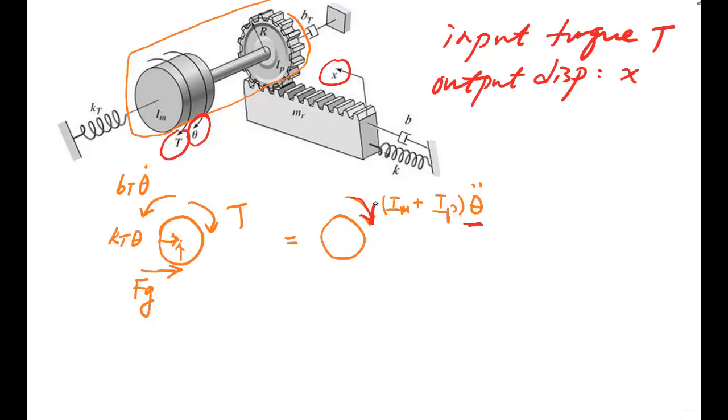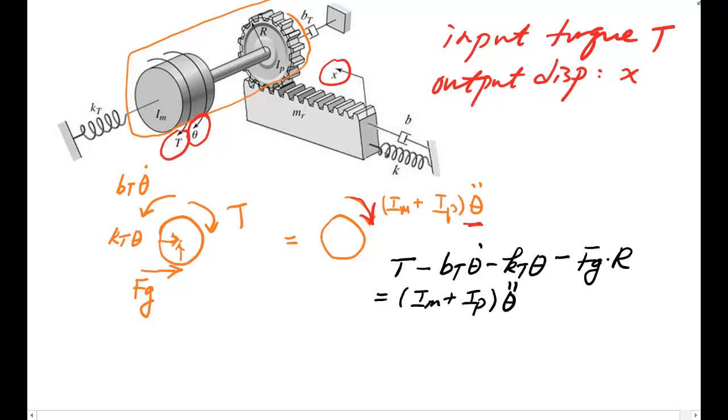Okay, once we set the free body diagram and kinetic diagram, we can set the differential equation. Which is: T minus the resistance torque bₜθ̇ minus kₜθ, also the torque due to the force from the rack which is Fᵍ times distance r, equals (Iₙ + Iₚ)θ̈. That's one. Second one is on the rack.